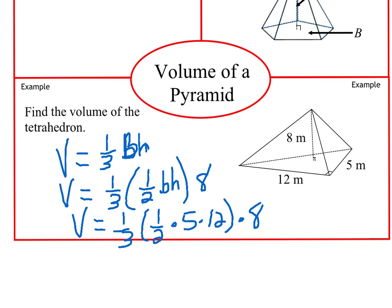So filling in the remainder of the information, one-half, five times 12. Five times 12 is 60, so half of that would be 30.